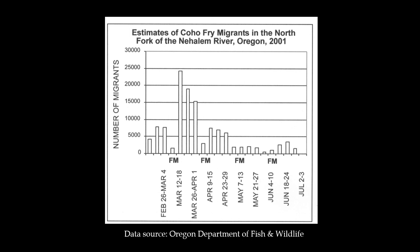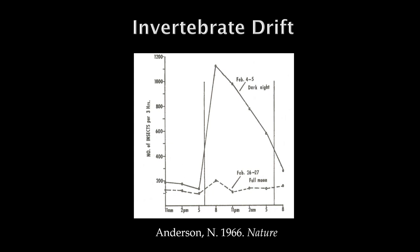One might question if salmonid events are entrained to the lunar-driven ocean tides. A study led by Oregon State aquatic entomologist Dr. Norm Anderson describes the dark moon movement of invertebrates in rivers. The field data indicates that salmonid migration and spawning activity is not entrained by ocean tides, but rather by light-dark lunar activity that extends up and down the food chain.